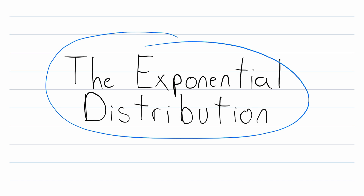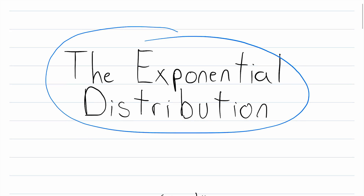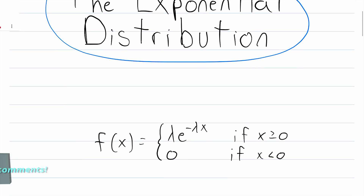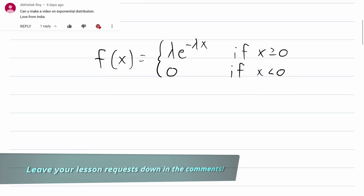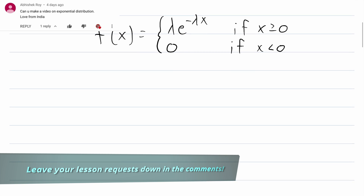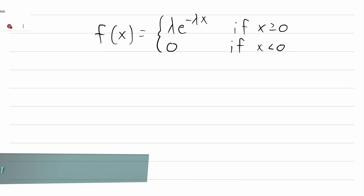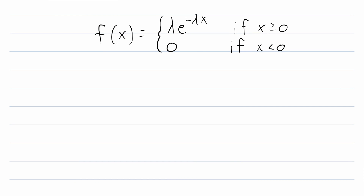The exponential distribution is one of the most common continuous probability distributions, and that's what we'll be going over in today's Wrath of Math lesson. This is a viewer requested video — I always appreciate those requests, so be sure to leave yours in the comments. We'll be giving a helpful overview of the exponential distribution, covering the probability density function, the cumulative distribution function, the mean, the variance, the standard deviation, and some examples.